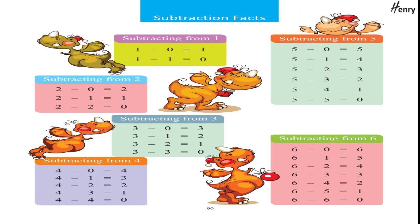Subtracting from one: one minus zero equals one; one minus one equals zero. Subtracting from two: two minus zero equals two; two minus one equals one; two minus two equals zero. Subtracting from three: three minus zero equals three; three minus one equals two; three minus two equals one; three minus three equals zero.